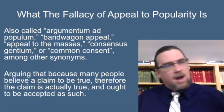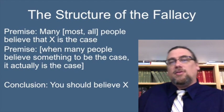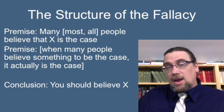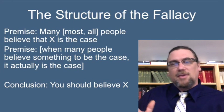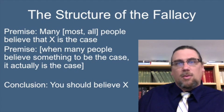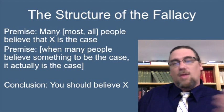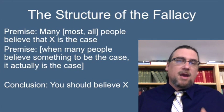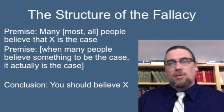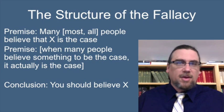Let's look at the actual structure of this fallacy. It has just two premises — one in brackets is an implicit premise, because if you make it explicit people will say this is not good argumentation, so usually it's left unstated. The first premise is: many people believe claim X to be true. But how do you get from that to 'you should believe X' or 'X is true'?